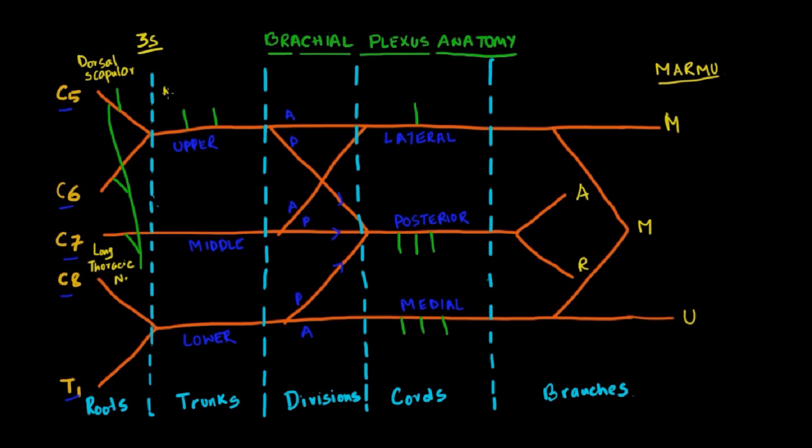Next two nerves come from the upper trunk. This is the nerve to subclavius. And the third one is the suprascapular nerve. So that completes the first triplet. All starting from S.